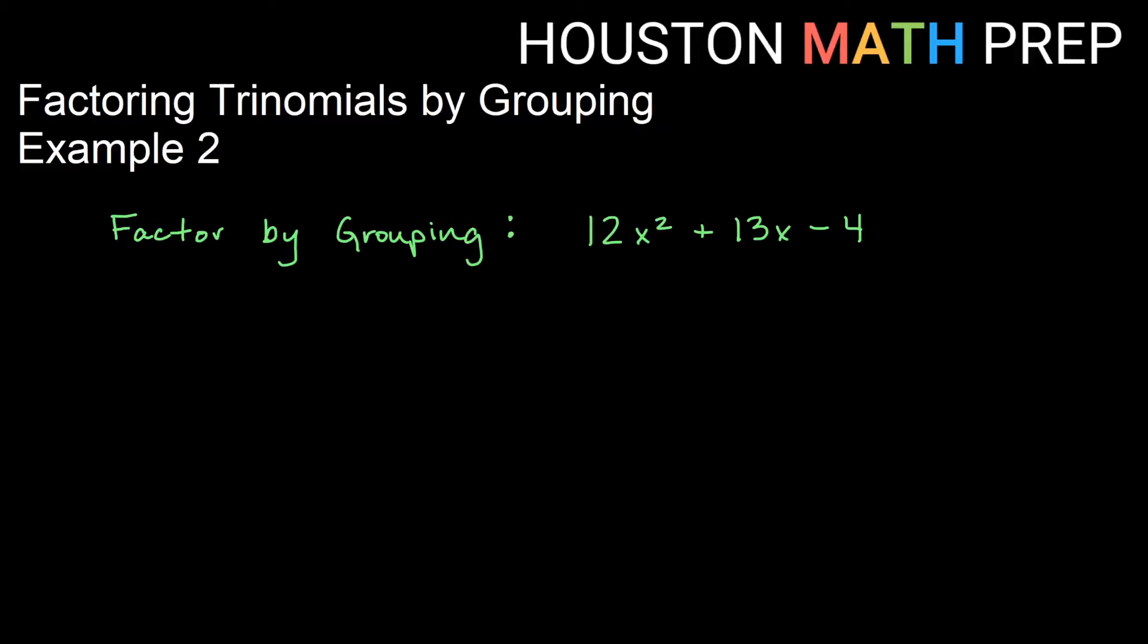Welcome back to another example of factoring trinomials by grouping. We've got our second example here which is 12x squared plus 13x minus 4.